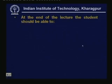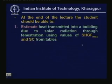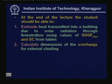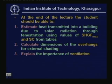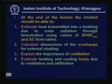At the end of the lecture you should be able to estimate heat transmitted into a building due to solar radiation through fenestration using values of solar heat gain factor and shading coefficient from tables, calculate dimensions of overhangs for external shading, explain the importance of ventilation, and estimate heating and cooling loads due to ventilation and infiltration.